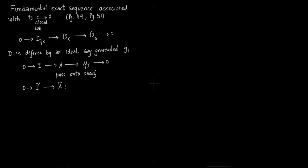Tilde means that on an open set you take everything in that ideal I and adjoin 1 over the polynomial which defines the open set. This ideal I tilde can also be defined by A tilde times g1, because the ideal is generated by g1.